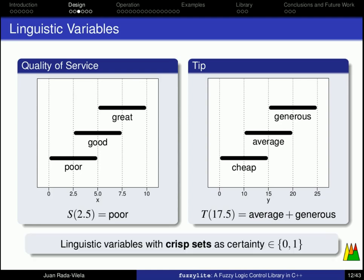Now, these are linguistic variables with crisp sets, because for every possible value, the terms are associated with a degree either 1 or 0, that is, either the term is associated or it is not. For example, we have seen that for a service of 2.5, the term associated is poor, but it is not good nor great. And for a tip value of 17.5, it is average and generous, but it is not cheap.